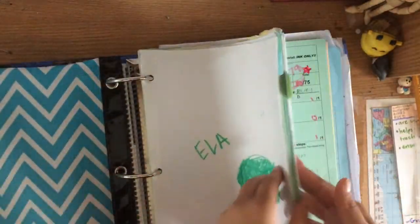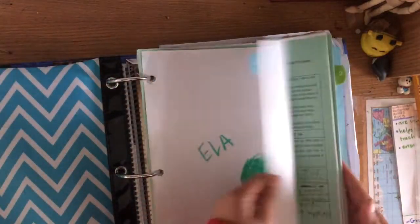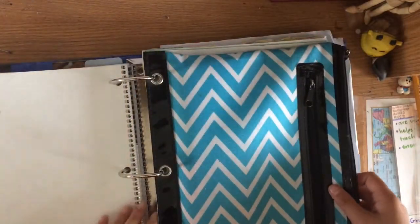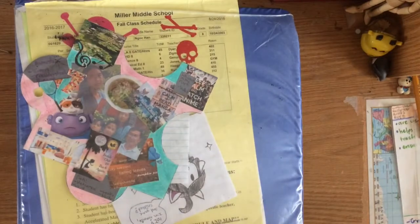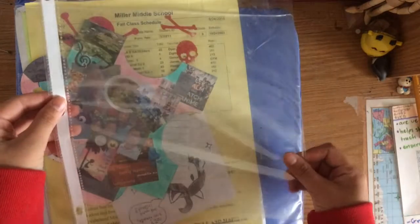There can be no loose papers in your binder. Some students may use the excuse that their papers aren't hole punched. If your papers aren't hole punched, you can always hole punch them yourself or use a sheet protector.